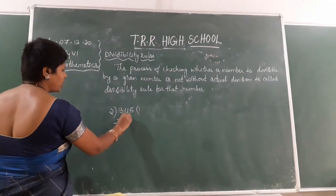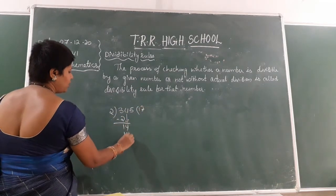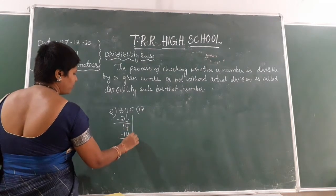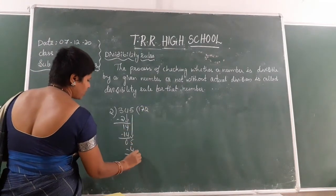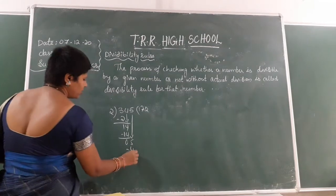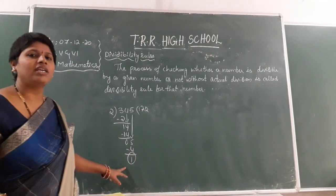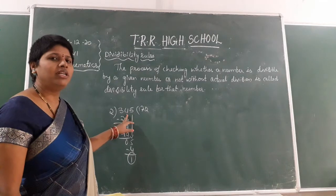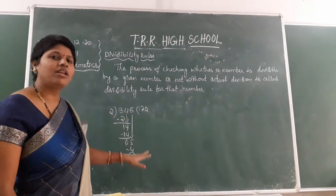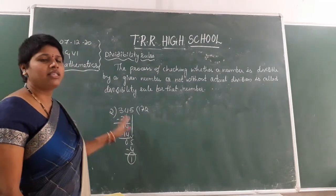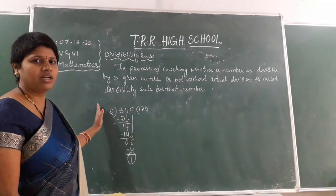Suppose 345 is there and I want to divide by 2. The only method you know is division. So I perform the division: 3 divided by 2 gives 1, bring down 4, then copy 5 — remainder is 1. When you get remainder 1, you can say this number is not divisible by 2.